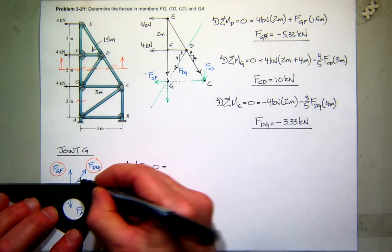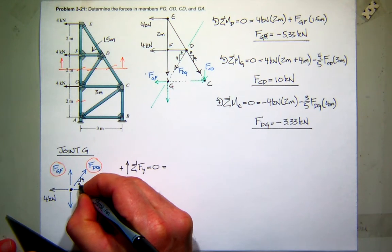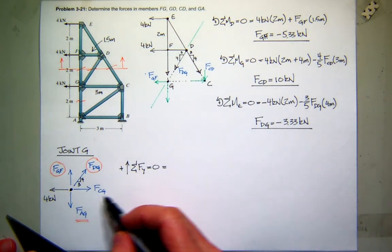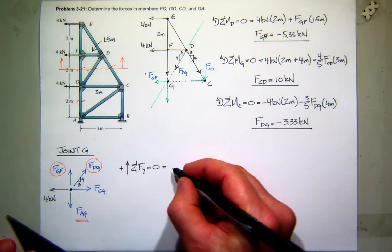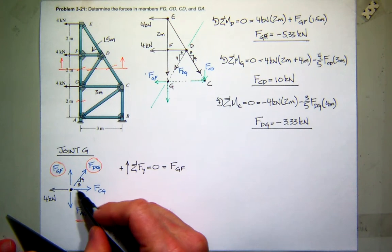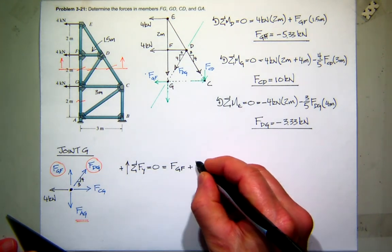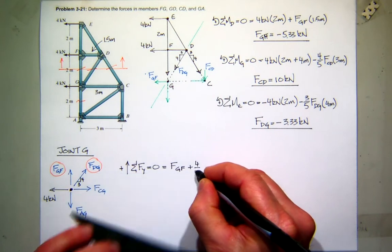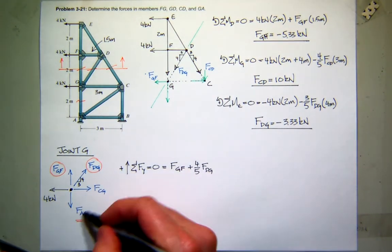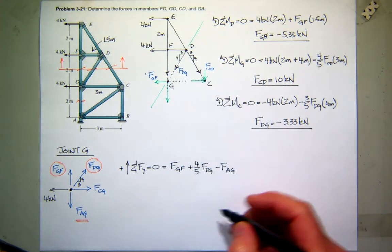Let's recall that we know that the slope of this is a rise of 4 to a run of 3. So starting here at the top, I've got GF acting up. I've got DG also acting up, but I only want the vertical component which is 4/5. So that'll be plus 4/5 DG. And then I've got the thing I'm looking for acting down, the force in AG.